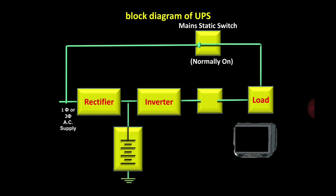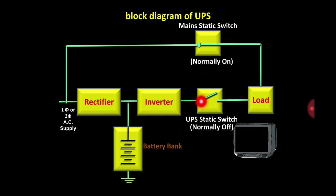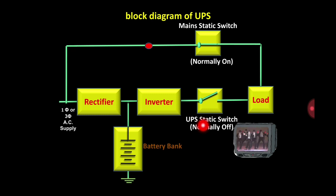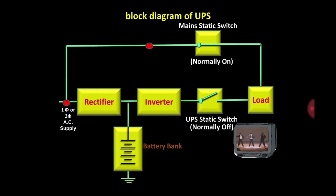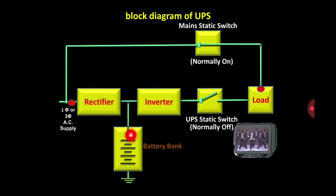When the main supply is available, the UPS static switch is normally OFF and the main static switch is normally ON, because the chances of having main supply available are more. So the load is receiving supply from the main line, and at the same time the battery is getting charged. Since the battery requires DC, we use a rectifier — the rectifier converts the AC supply into DC and charges the battery.